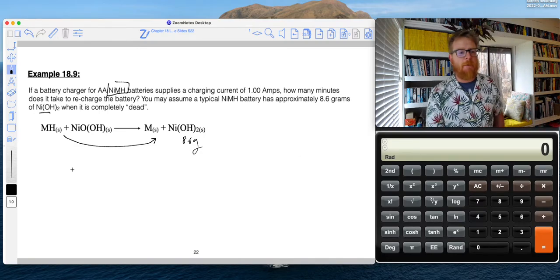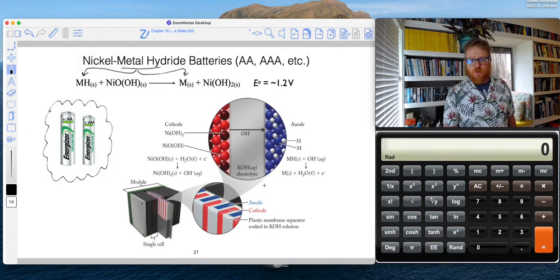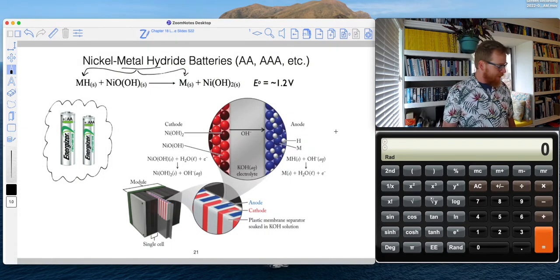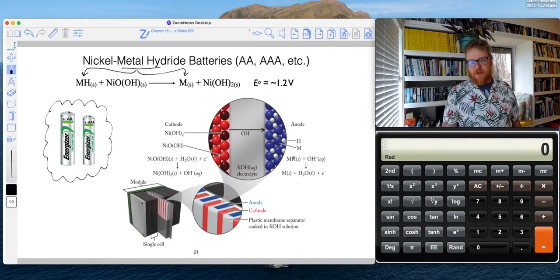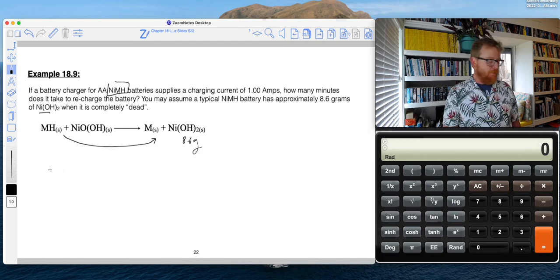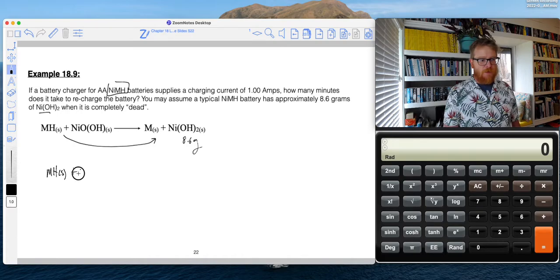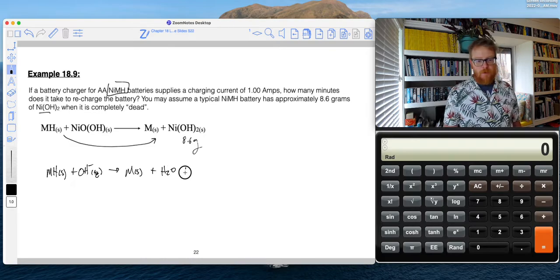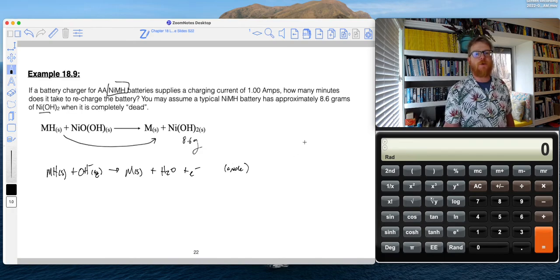So the first thing we have to do is separate this into its two half reactions and we've got those written over here. So we can see the anode half reaction goes like this. Metal hydride solid plus hydroxide makes metal solid plus H2O liquid and one electron. So let's write that down. And I'll try to save some room for my calculations. So the metal hydroxide plus OH makes my solid metal plus H2O plus an electron. So that's my anode half.